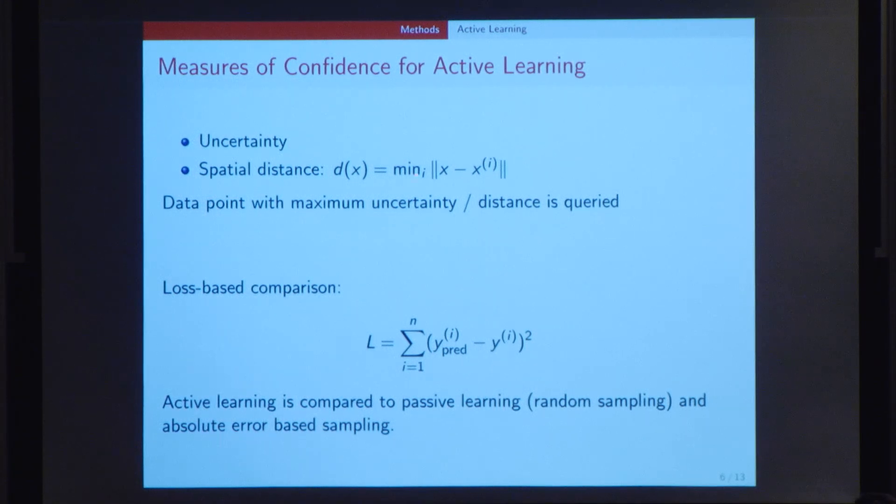It's calculated as the distance of the evaluated point to the closest point in the training dataset. The data point with the maximum uncertainty in the first case or the maximum distance in the second case is the data point that the algorithm is the least confident about, and hence the one that is queried. By queried, I mean that the data label for the point is queried and it's added to the training dataset, and the regressor is retrained.